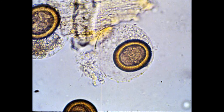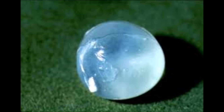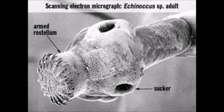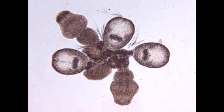Both cystic echinococcosis and alveolar echinococcosis represent a substantial disease burden worldwide. There may be in excess of millions of people living with this disease at one time. Many of these people will be experiencing several clinical syndromes which are life-threatening if left untreated, and even with treatment, people often face a reduced quality of life.